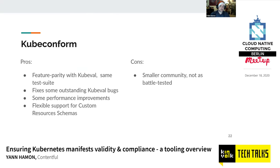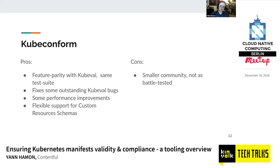KubeConform has feature parity with kubeval and uses the same test suite. It fixes outstanding kubeval bugs and has three to four times performance improvements — quite useful in CI or local iteration. Support for custom resources is flexible: you can organize them on disk however you want, specific to a Kubernetes version, etc. The cons: it's a smaller project with a smaller community and is relatively new, so not as battle-tested — but we've been using it for a while and it works well for us.